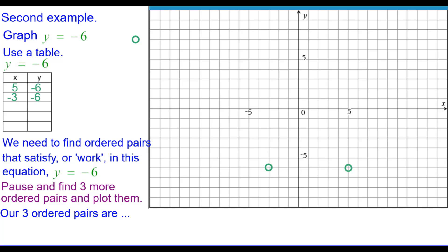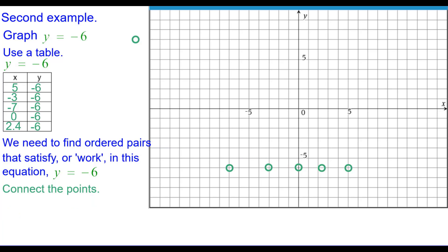Our three ordered pairs are negative 7 comma negative 6, 0 negative 6, and 2.4 comma negative 6. Connect the points.